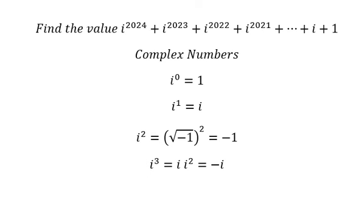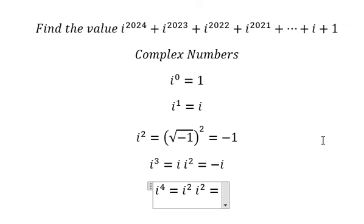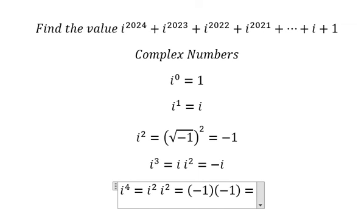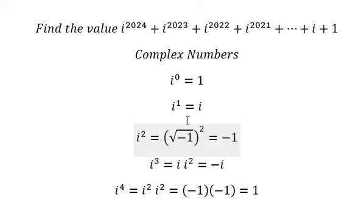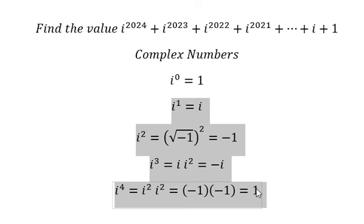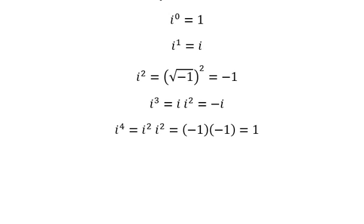i to the power of four equals i squared times i squared, which is negative one times negative one, giving us positive one. So if we sum these four units together: i^0 + i^1 + i^2 + i^3 = 1 + i + (−1) + (−i) = zero.